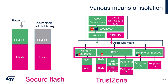A step further is TrustZone, a new concept from ARM. It is based on filtering bus transactions based on the security level of the core. This allows full flexibility in assigning memory regions, peripherals, and even individual GPIOs to either the secure or non-secure application.